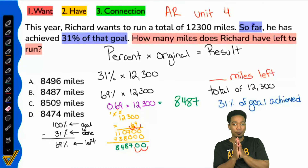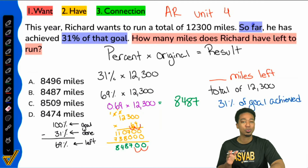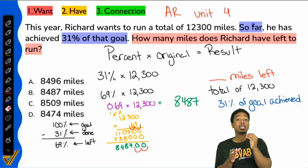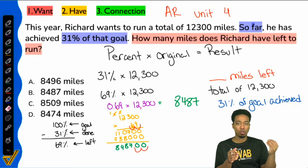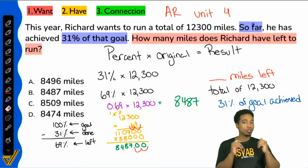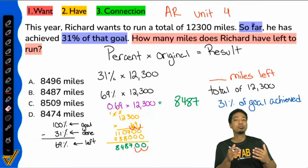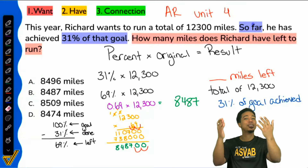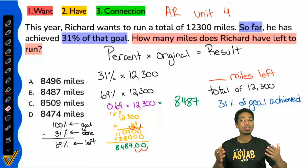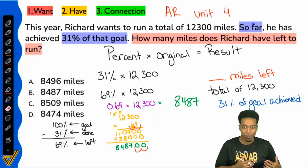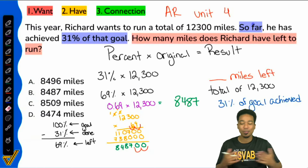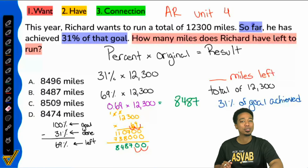If there's anything to remember before we leave this video, it's that the percent you apply must represent the results you get — if not, you're probably not going to have the correct final answer. You've got this — keep moving forward the right way. If this video was helpful, go ahead and drop a like and leave a comment. Let us know, because we want to make sure we're doing everything we can to be the best ASVAB coaches we can be.